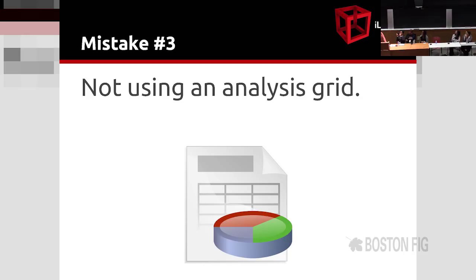Mistake number three: not using an analysis grid. I've often seen situations where the person organizing the playtest is happy just to take notes in their notebook. Using an analysis grid makes your life easier, so you can take notes on the different items that interest you during the playtest. For example, in one section of the grid I will take notes on the use of the camera; in another section, I will note which skill is used by the player and how many times they use each skill. You should also have one section for everything that wasn't planned. This grid facilitates your analysis at the end, and during the playtest, if you see that one section is empty, you can return to it before the tester leaves — for example, asking, 'Hey, you never used this skill — why?'